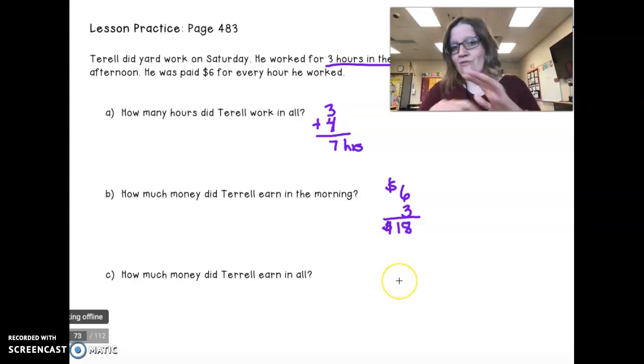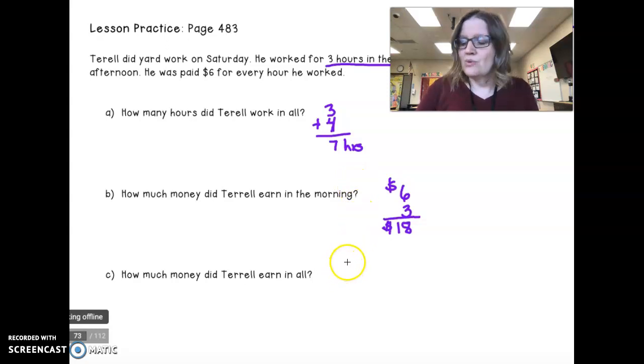How much money did Terrell earn for the whole day? Well, we already know that he's worked seven hours for the whole day. So, we say seven hours multiplied by $6 an hour and that gives us $42 total.